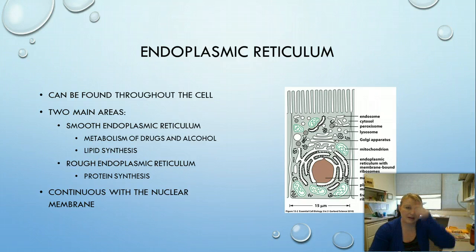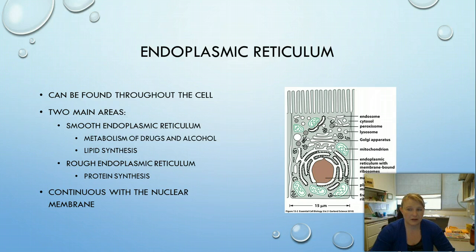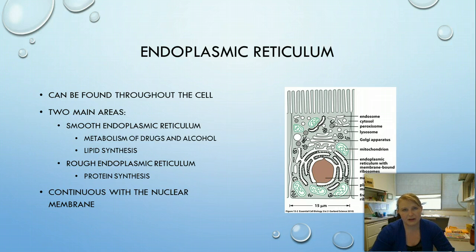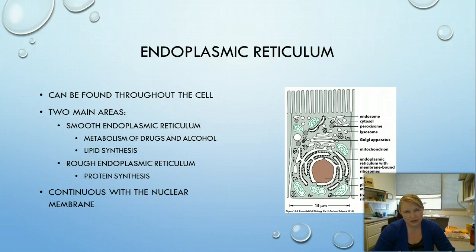The next organelle is the endoplasmic reticulum, or ER, which is connected to the nuclear membrane. There are two types: the rough ER, which has ribosomes on it and is used for protein synthesis, and the smooth ER, which is responsible for the metabolism of drugs and alcohol as well as lipid synthesis — this is where membrane generation occurs. The ER is continuous with the nuclear membrane, so as RNA leaves the nucleus it can go straight into the endoplasmic reticulum. We'll revisit the ER in the next chapter because it's involved in cell communication.